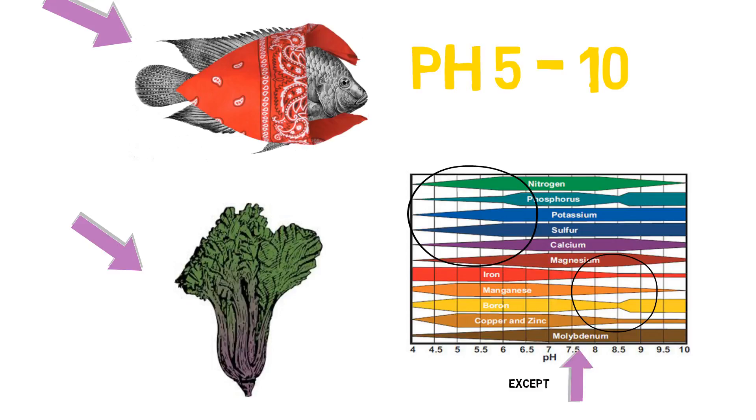And looking at the pH chart, we can see that there's an ideal spot for nutrient uptake, and that's usually somewhere around 6 to 7. 6 to 7, that's the sweet spot. So we know where we're at with the plants.